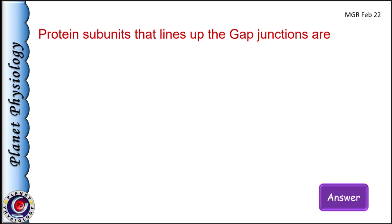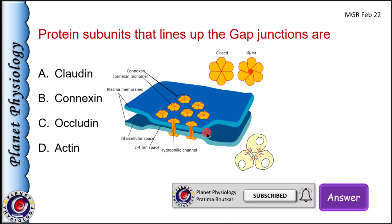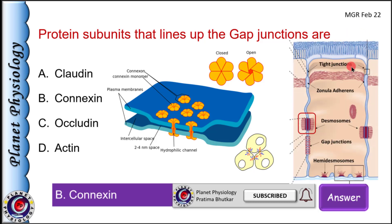Protein subunit that lines up gap junctions: A) claudin, B) connexin, C) occludin, and D) actin. Gap junctions are made up of proteins called connexons, each made up of 6 subunits called connexin. So correct answer is B) connexin. Tight junctions are made of claudins and occludins, while zona adherens and desmosomes are formed by cadherins. Focal adhesions contain integrins and are associated with actin.